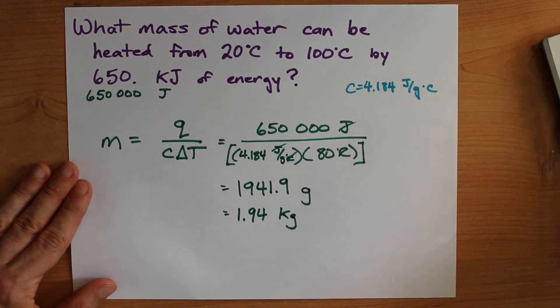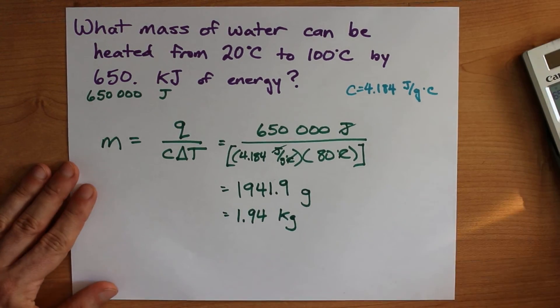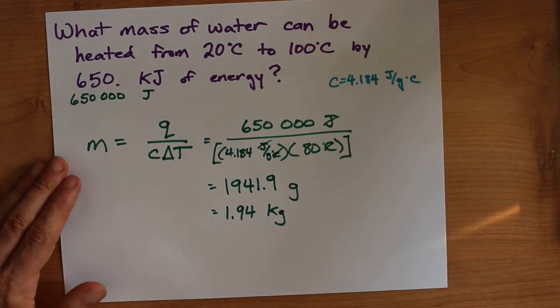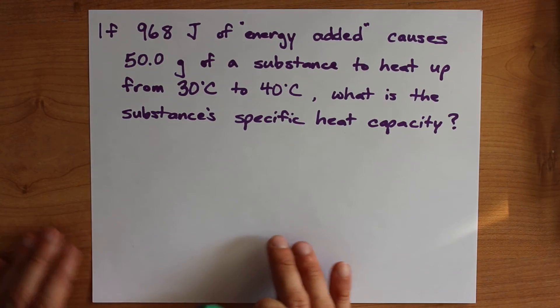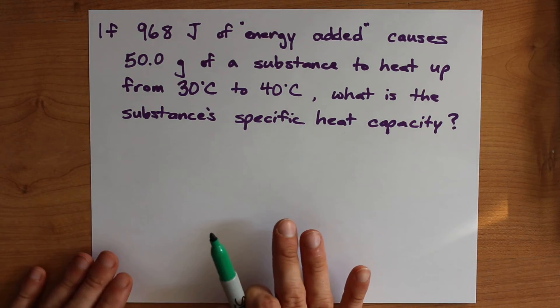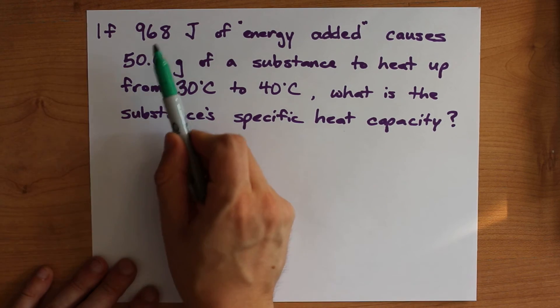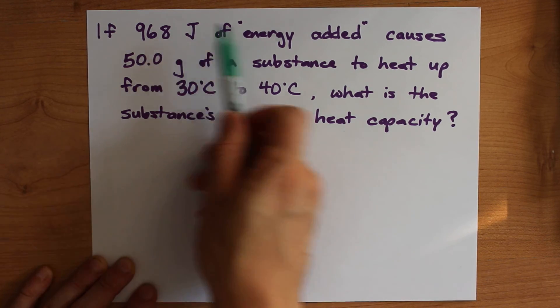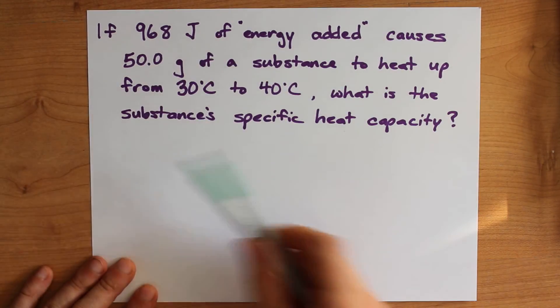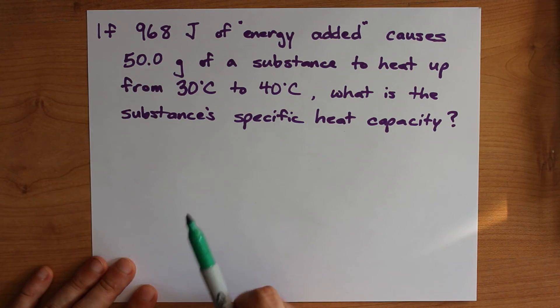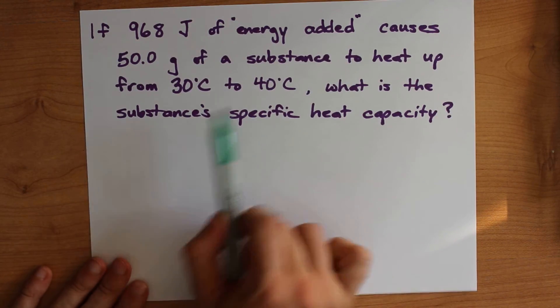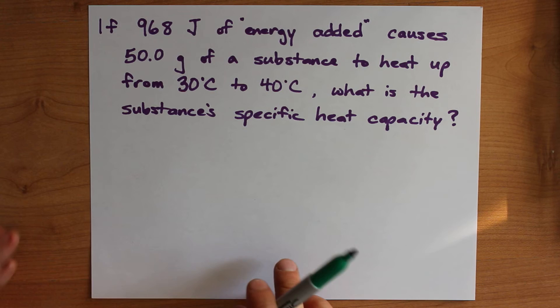Strange but true. And the last thing you might be asked to solve for — well, you could be asked to solve for delta t, but I have another video for that — is if we're adding 968 joules of energy to something and it weighs 50 grams and we only want to heat it by 10 degrees celsius, what's the specific heat capacity?